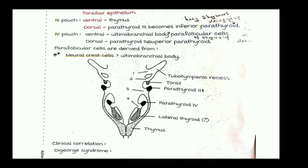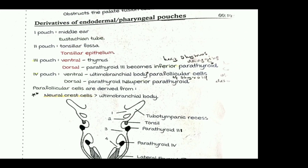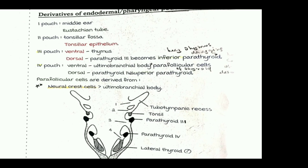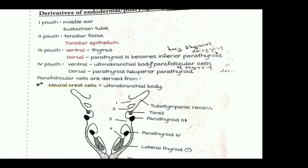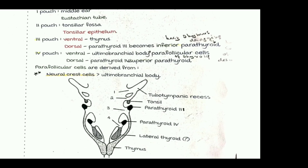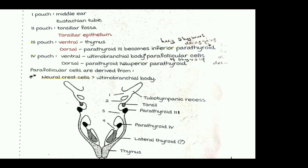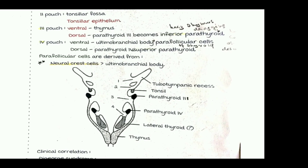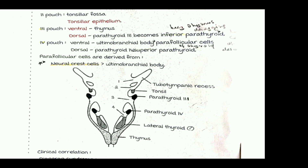In the diagram, we can see that from the first pharyngeal pouch the tubotympanic recess forms the middle ear and the Eustachian tube. The second pharyngeal pouch forms the tonsillar fossa and tonsillar epithelium. The third pouch forms the thymus and parathyroid three, becoming the inferior parathyroid. The fourth pouch ventral part forms the ultimobranchial body giving parafollicular cells, and the dorsal part forms parathyroid four, the superior parathyroid. The thymus then descends into the thorax along with parathyroid three.